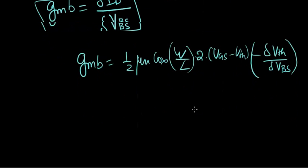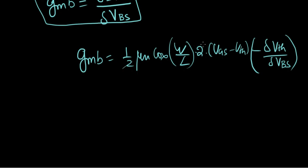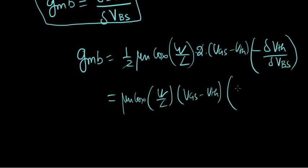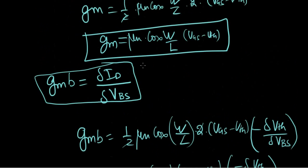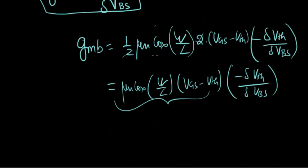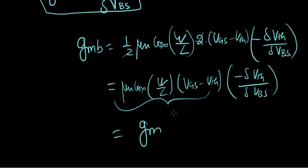So again, 2 and 2 cancel. What we have left here is mu_n C_ox W over L times Vgs minus Vth times the same thing. And this here is nothing but gm, right? You've derived that here. So it's gm times negative this.